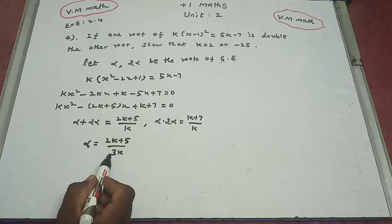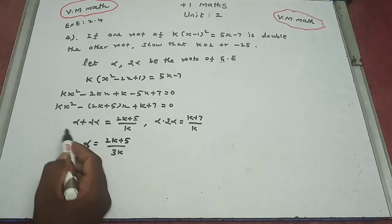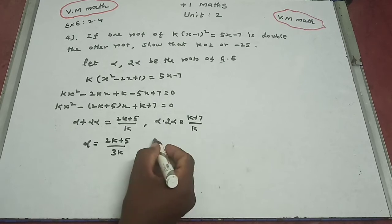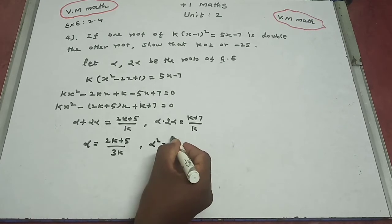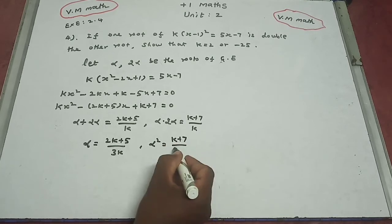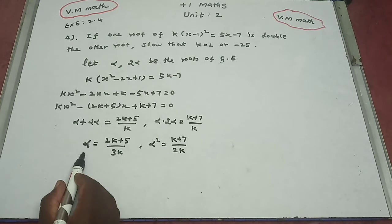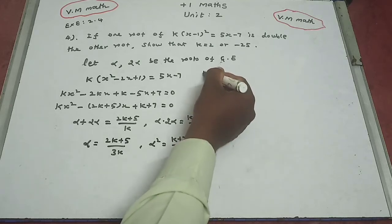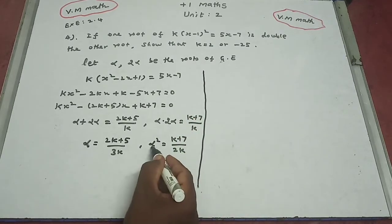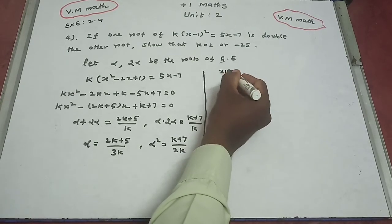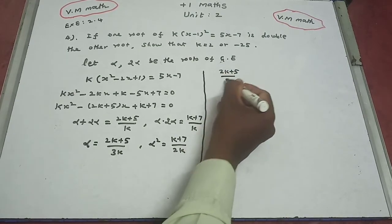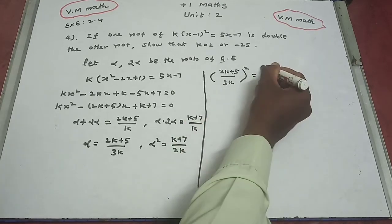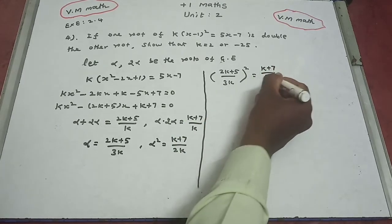From the sum of roots, alpha = (2k + 5) / (3k). From the product of roots, alpha squared = (k + 7) / (2k). Now substitute alpha into the alpha squared expression.